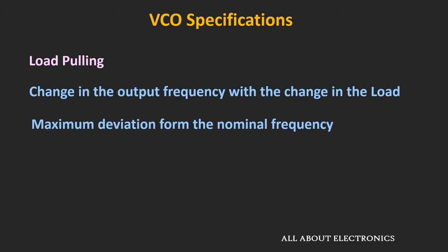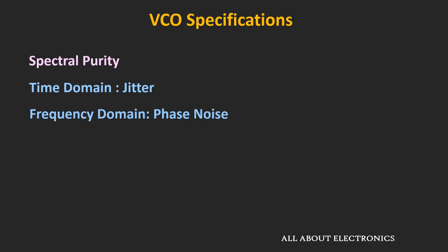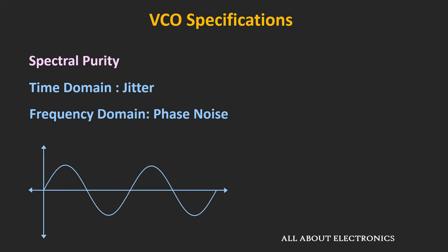The next very important specification is spectral purity. When referred to in the time domain, it is called jitter, and when referred to in the frequency domain, it is called phase noise. Ideally, at a particular voltage, the VCO should generate only a single frequency, and if we see the signal in the time domain there should be no change in amplitude or periodicity. But in reality, there is some uncertainty in the waveform in terms of periodicity, and this uncertainty is referred to as jitter.